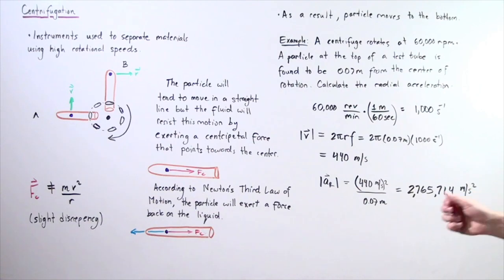Let's look at the following example. A centrifuge rotates at 60,000 revolutions per minute, RPMs. A particle at the top of a test tube is found 0.07 meters from the center of rotation.